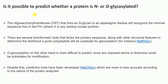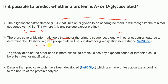Can we predict whether a protein is N- or O-glycosylated? Yes — several bioinformatics tools are available. For example, the oligosaccharyltransferase (OST) that links N-glycans to asparagine will recognize the minimal consensus sequence: asparagine-X-serine/threonine. Bioinformatics tools analyze the primary sequence and structural features to determine the likelihood of glycosylation. One such tool is NetNGlyc, used to predict N-glycosylation.